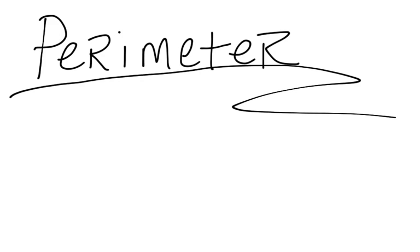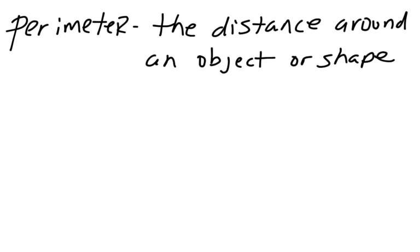All right, so let's talk about perimeter. Very short video today. So perimeter is the distance around an object or a shape.